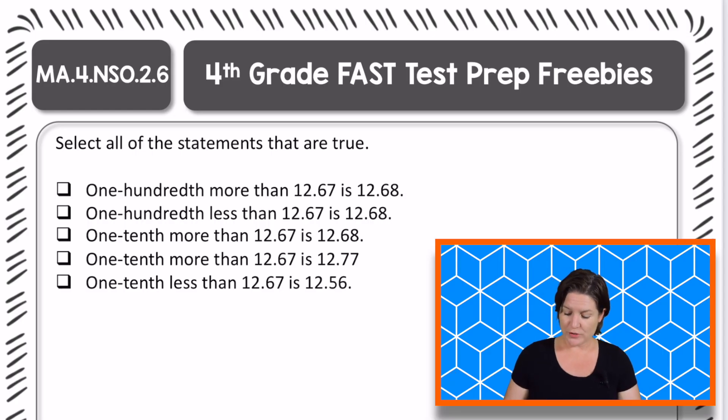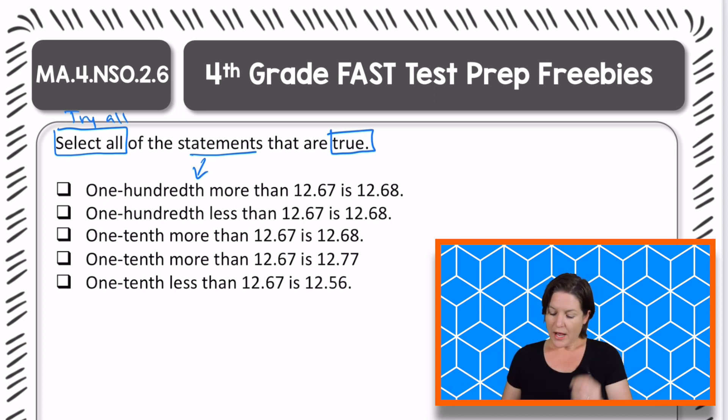Welcome back fourth grade. This one says to select all. That means we're going to try all of the statements that are true. One-hundredth more than 12 and 67 hundredths is 12 and 68 hundredths. Now this right here is just a period to close the statement, where this one right here is the decimal point. Sometimes students get confused and think there's two decimal points. There's one decimal between the 12 and the 68, and the other one is the period to close the statement.